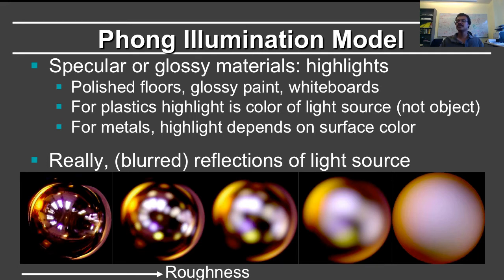Examples of specular or glossy materials are polished floors, glossy paint, whiteboards. Furthermore, highlights behave somewhat differently from plastics or dielectric materials as opposed to metals. So on plastics, the highlight is the color of the light source, not the body color of the object. And this is a very common thing. You could have a green ball and you look at the highlight, it's still white because the light source is white.